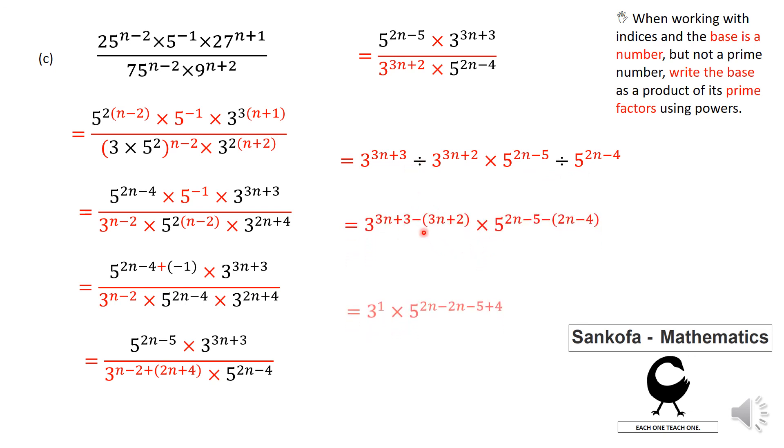So once you subtract the indices, you're going to get 3 raised to the power of 1 times, but I had to first remove the brackets here so that you can see, I've got a minus times a negative 4 becomes a positive 4. So I've got 3 to the power of 1 times 5 raised to the power of negative 1, which is basically the same as 3 over 5.